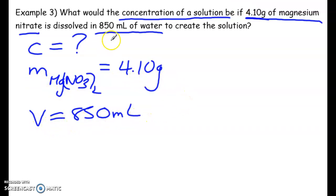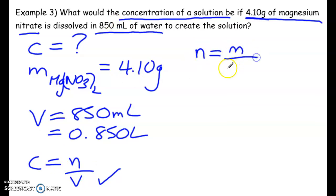The mass of magnesium nitrate is 4.10 grams. The volume is 850 milliliters. We're going to convert that right away because we know we need it in liters, right? So concentration is moles per liter, right? C is equal to N over V. We have volume right now, but we do not have the moles. However, we have the mass. So if you recall, we can solve for the moles by doing mass over the molar mass.